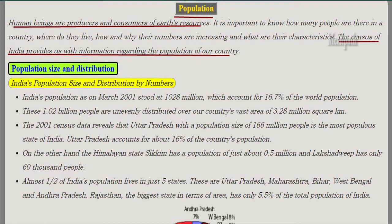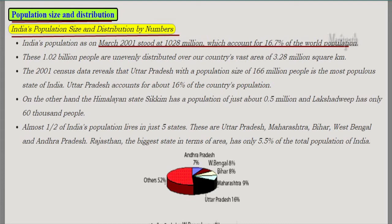Population size and distribution — India's population size and distribution by numbers: as of March 2001, India's population stood at 1028 million, which accounts for 16.7 percent of the total world population. These 1.2 billion people are unevenly distributed over a vast area of 3.28 million square kilometers.